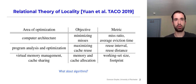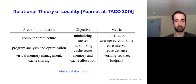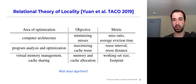Our work builds on the foundation from the relational theory of locality. Ron and Smith and Peter really defined the locality concept in this paper in 2018. We have three different views of locality, and they're summarized by the miss ratio on the right side.